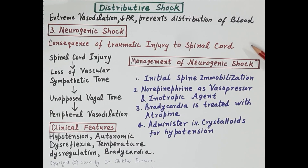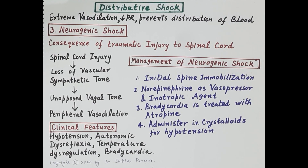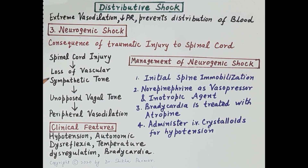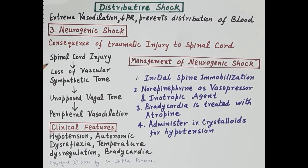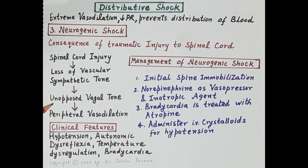This slide covers neurogenic shock. Neurogenic shock is a consequence of traumatic injury to the spinal cord, which can be caused by an accident, sports injury, gunshot wound, or improper administration of spinal anesthetic. Damage to the spinal cord disrupts the sympathetic tract of the spinal cord. Since there are two autonomic tracts — sympathetic and parasympathetic — disruption of the sympathetic tract results in unopposed vagal tone, that is, unopposed parasympathetic tone.